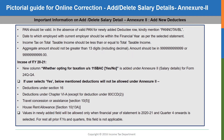The date to which employed with the current employer should be within the financial year as per the selected statement. Then the income tax on total taxable income should be less than or equal to the total taxable income. And the aggregate amount should not be greater than 13 digits including the decimal points. Now from financial year 2021 onwards, a new column — whether opting for taxation under Section 115BAC — has been added under Annexure 2 filed for form 24Q quarter 4 statement. If the user selects yes, then some of the deductions in the income tax won't be allowed to the deductee in Annexure 2.